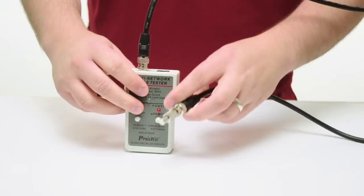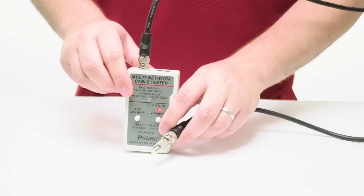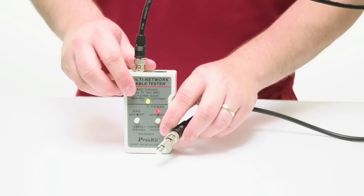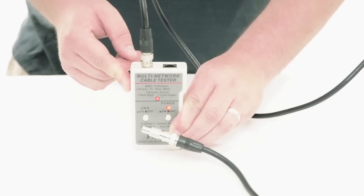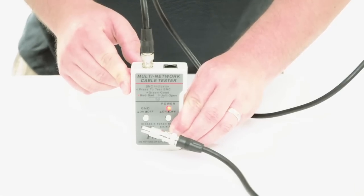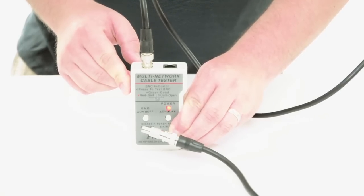With a simple push of a button, the BNC LED indicator will light up green if the cable is OK. If the BNC LED is red, the cable is bad. If the BNC LED remains unlit, then the cable has an open circuit.